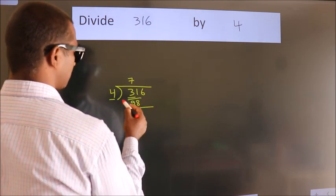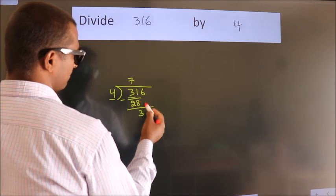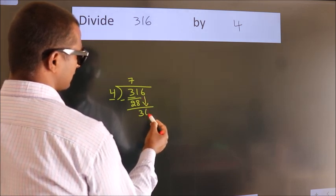Now we should subtract. We get 3. After this, bring down the next number. So, 6 down.